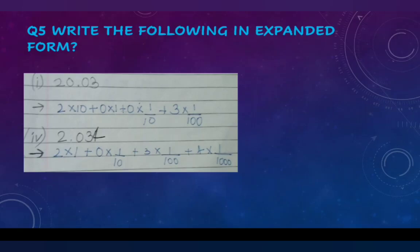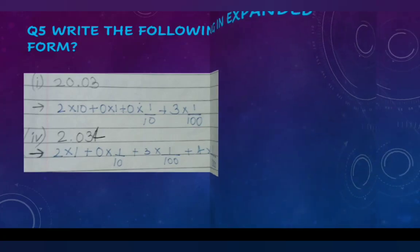For the expanded form, the fourth part example is: 2 × 1 + 0 × (1/10) + 3 × (1/100) + 4 × (1/1000). We expand each digit by its place value. The digit 2 becomes 2 × 1, keeping the same value. Now let's move to the next question.